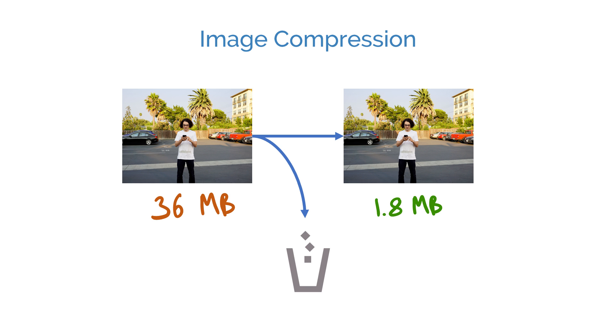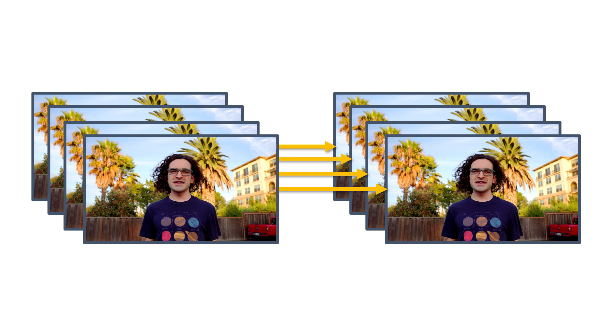We can easily extend image compression to video compression by compressing a video frame by frame. This approach is called spatial or intra-frame coding. Even doing that alone would significantly reduce the file size, but we can actually do much more than that.